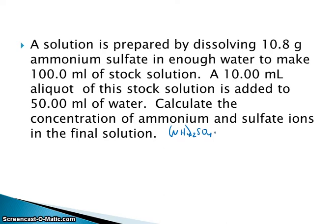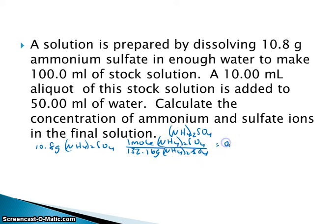And then we're going to calculate what the molarity is when we dilute it. And finally we're going to calculate the concentration of each of the ions in the solution. So we have 10.8 grams of ammonium sulfate. And let's convert that to moles. So one mole of ammonium sulfate is 132.16 grams. So that will give us, with three significant digits, 0.00817 moles of ammonium sulfate.